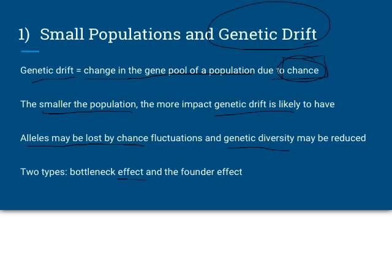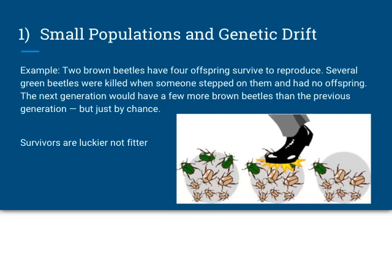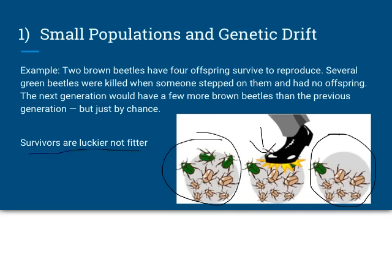There are two types of genetic drift: the bottleneck effect and the founder effect. As a general example, imagine a population of beetles — about one-third green and two-thirds brown. Someone comes by and accidentally steps on a bunch of them, and just by chance kills more green beetles than brown. Now the population is more brown and less green. This is not natural selection — the brown beetles were not more fit; the green ones just got unlucky. In genetic drift, the survivors are luckier, not fitter.